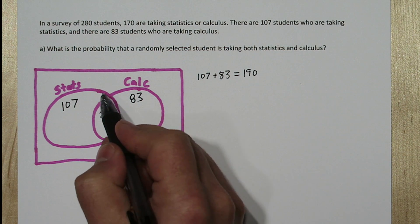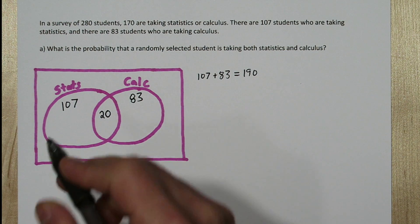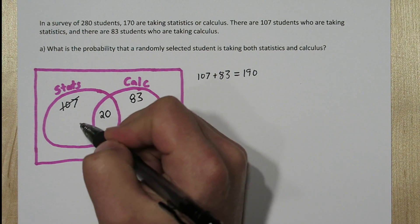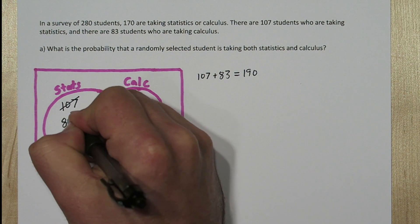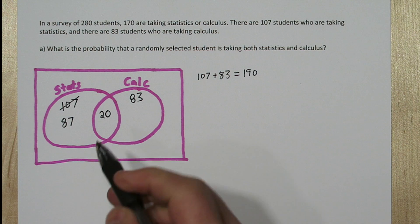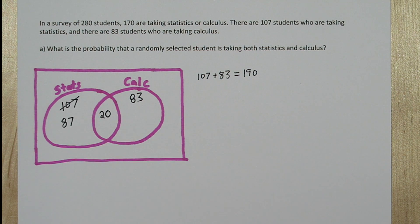And our stats bubble still needs to add up to 107. So we need to adjust this number by subtracting 20 from it. Now it's just 87, and the whole bubble adds to 107.